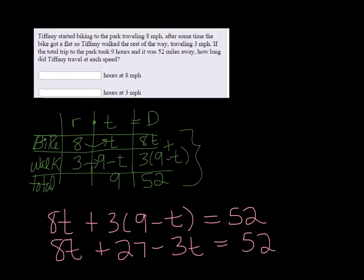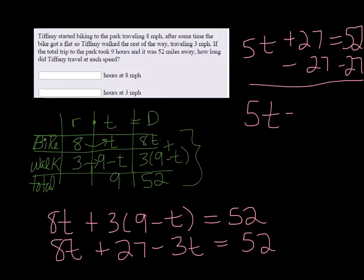Combining like terms we get 5T plus twenty-seven. We want to subtract twenty-seven from both sides. So we have 5T equals twenty-five. And then divide by five and we get T equals five.